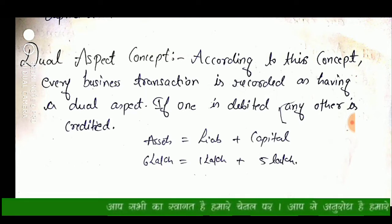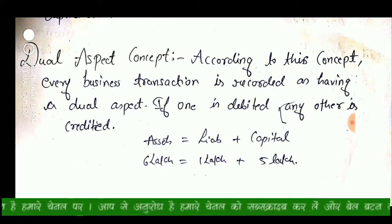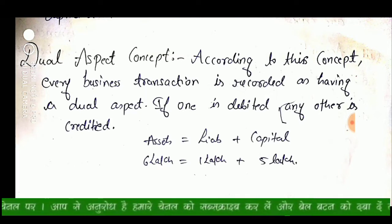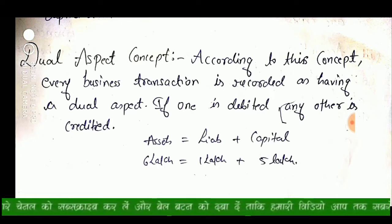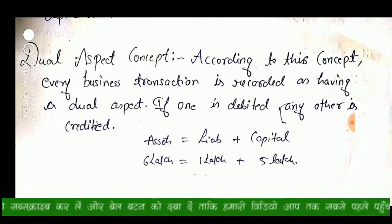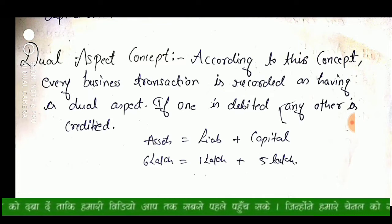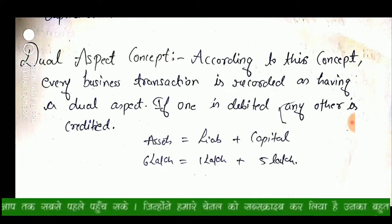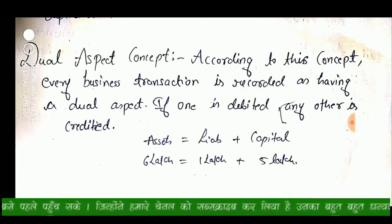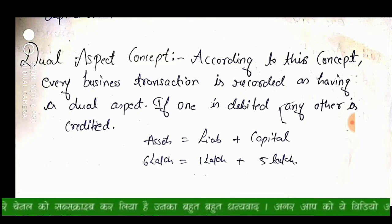If one account is debited, then the other is credited. For example, if you start a business and you put in capital of 5 lakh rupees and take a loan of 1 lakh rupees, in total you get 6 lakh rupees.